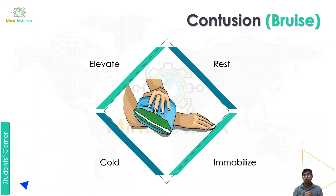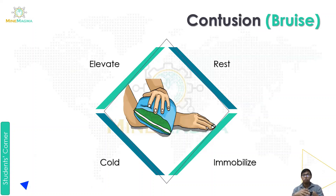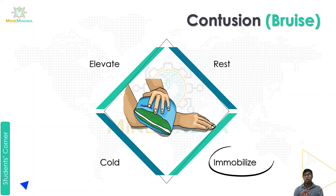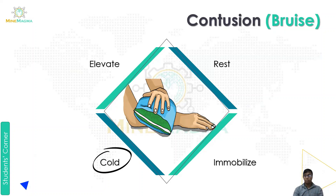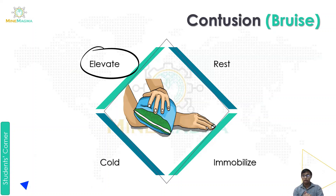Next is contusion and bruise. For a bruise or contusion injury, the basic four steps are: first, rest the injured area; second, immobilize it; third, apply a cold compress; and fourth, elevate the injured limb. These are the basic four steps for a bruise or contusion injury.